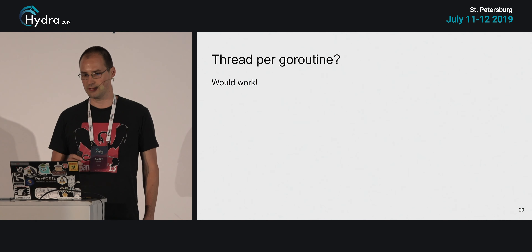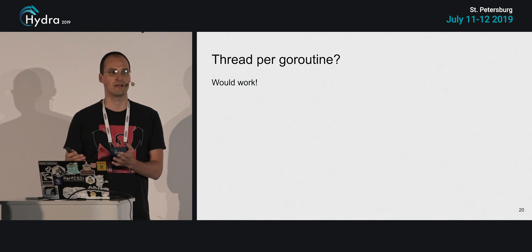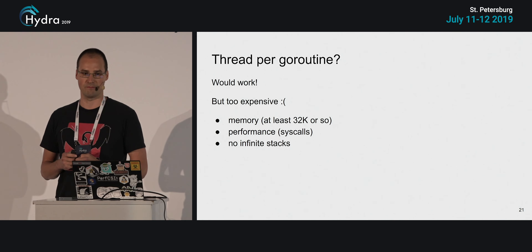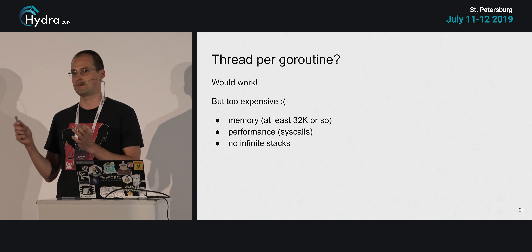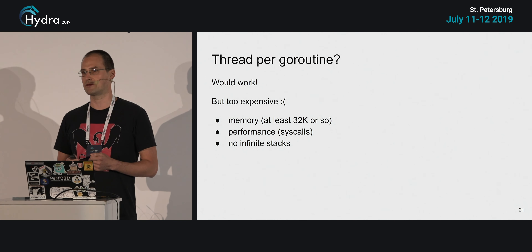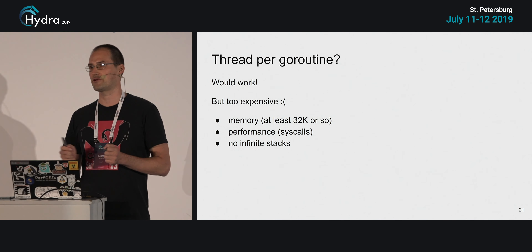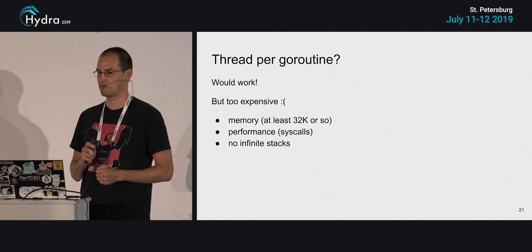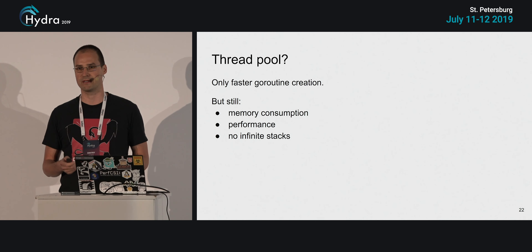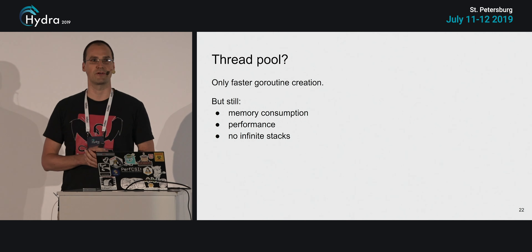How can we implement GoRoutines? The first straightforward idea is to use one OS thread per GoRoutine. When the user starts a GoRoutine, we create an OS thread to execute its code. This works logically, but it's too expensive: a thread consumes at least 32 kilobytes of memory for user stack, kernel stack, kernel descriptors, etc. Any operation — create, block, unblock, switch — requires system calls, adding overhead. We also won't get infinite stacks. A thread pool would allow faster GoRoutine creation through reuse, but we'd still have bad memory consumption, suboptimal performance, and no infinite stacks. So using a thread per GoRoutine is not going to work.